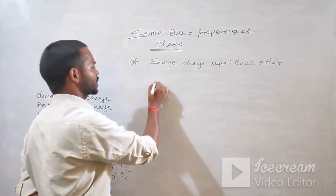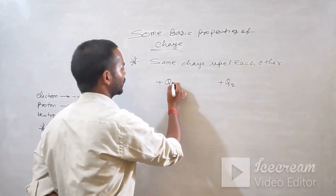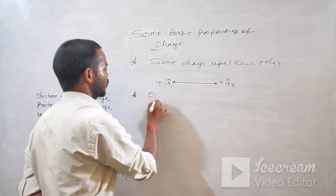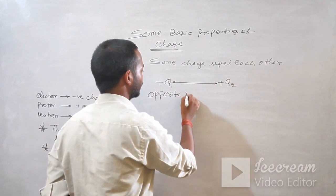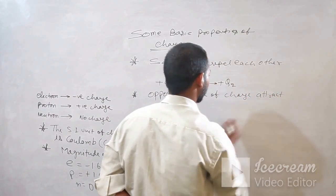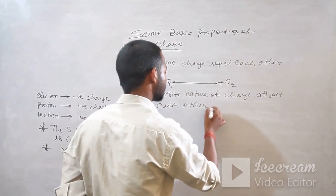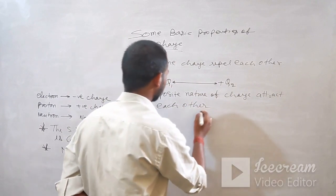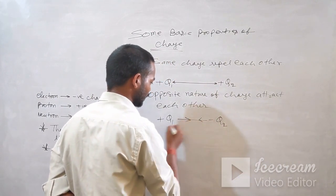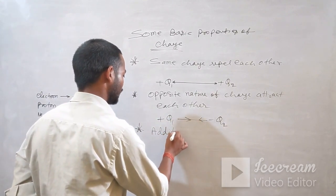Same nature charges repel each other. For example, if Q1 is positive and Q2 is positive, there will be repulsion — they will push each other away. Opposite nature charges attract each other. If Q1 is positive and Q2 is negative, there will be attraction.